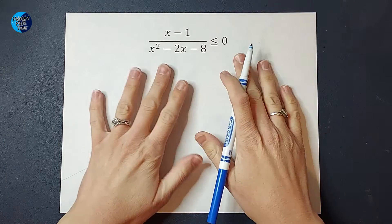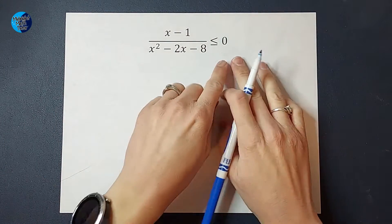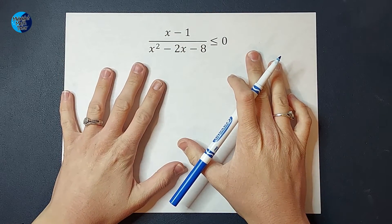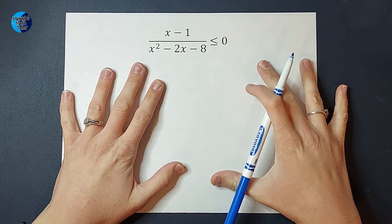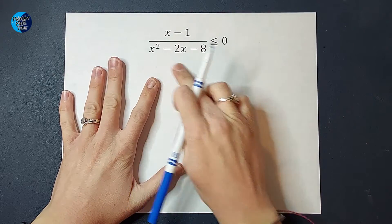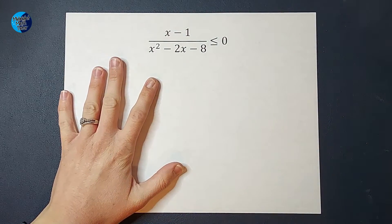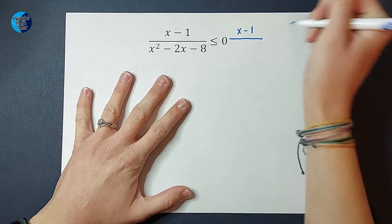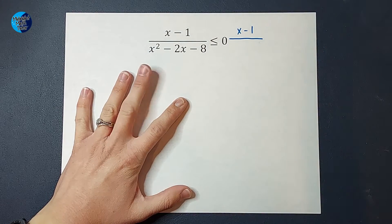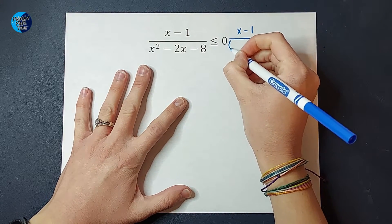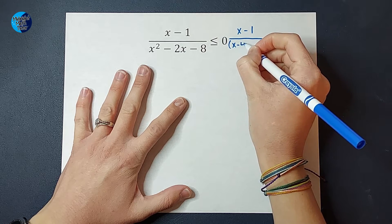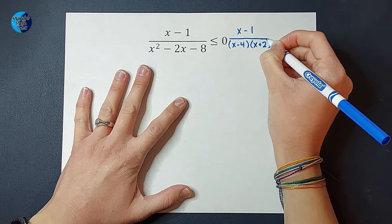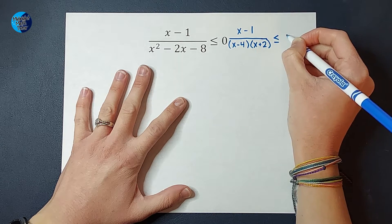When solving these, we want zero on one side and our problem on the other side — it just makes it a lot easier to work with. The next thing we want to do is factor anything that can be factored. So my top is going to stay the same, x minus 1. This factors to x minus 4 times x plus 2 on the bottom, and we are still less than or equal to zero.